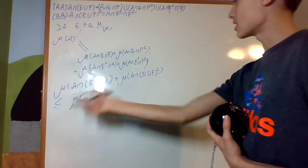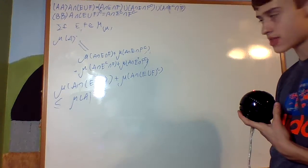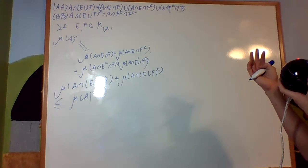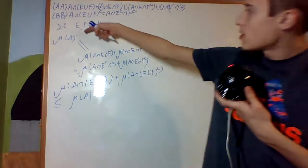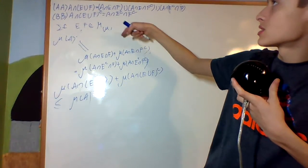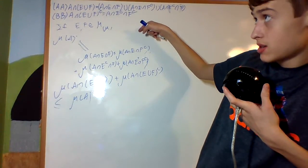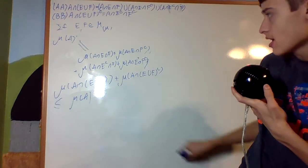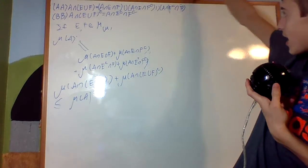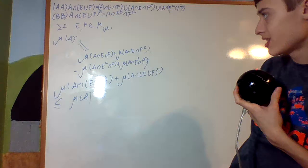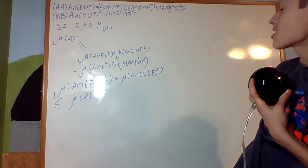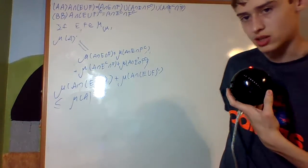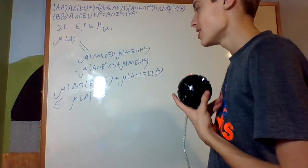Now μ(A) is equal to that full sum, therefore I can replace things to get that μ(A) is greater than or equal to μ(A∩(E∪F)) + μ(A∩(E∪F) complement). As an overview: I separated μ(A) into μ(A∩E) + μ(A∩E complement), then used measurability of F, used these facts about unions for subadditivity, and substituted μ(A) back in.